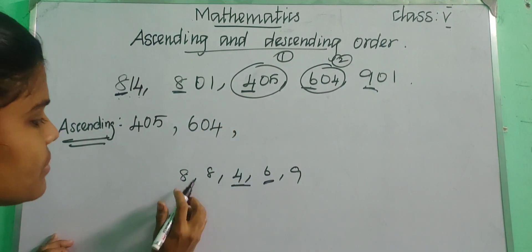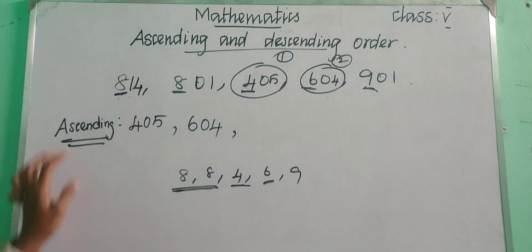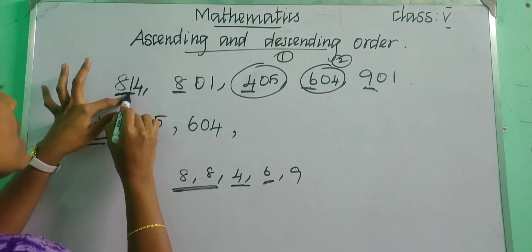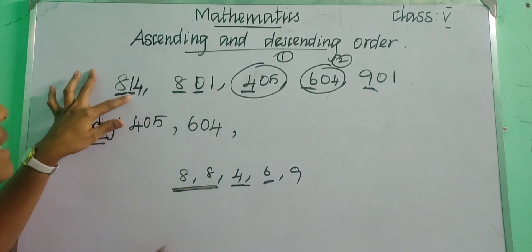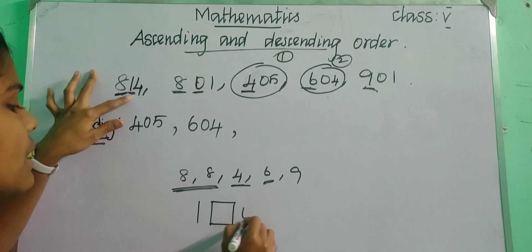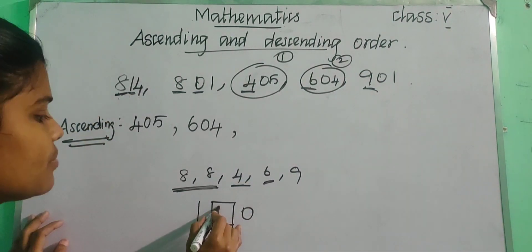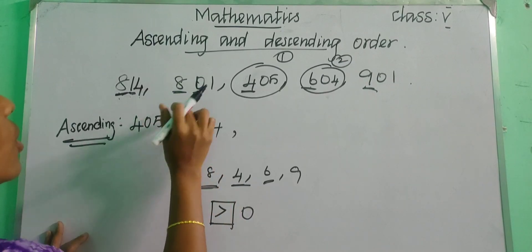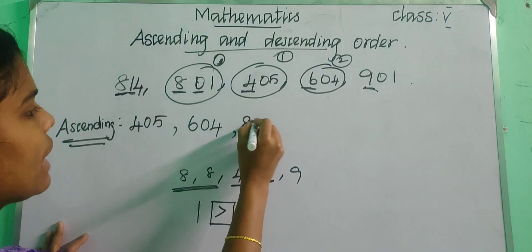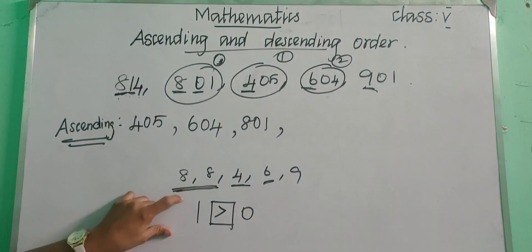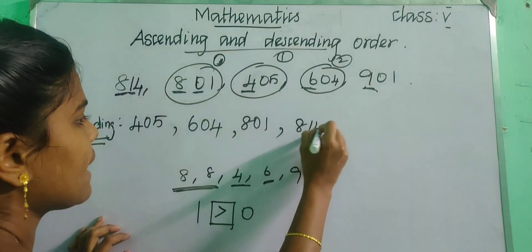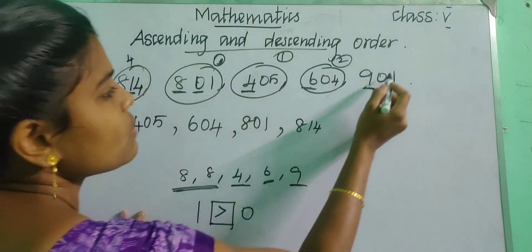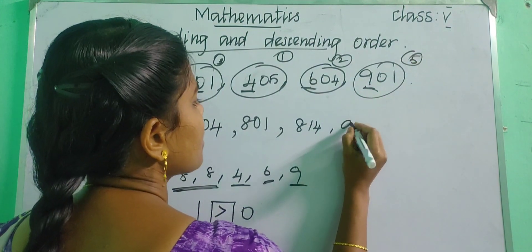We have 8 twice, so we need to check the 10s place. In 814, we are having 1 in 10s place, and in 808, we are having 0 in 10s place. Compare: 1 is bigger than 0, so the number having 0 in 10s place is the next smallest — that is 808. So 808 is the third number. Then 814 is the fourth number, and at the last we write 901.